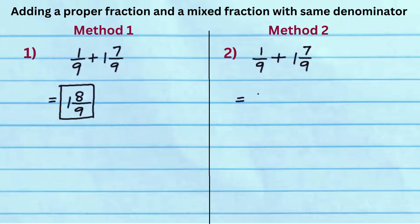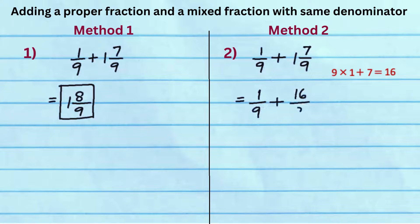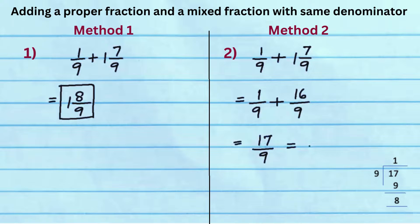In method 2, write 1 by 9 as is, and convert mixed fraction 1 and 7 ninths to 16 by 9. Add numerators 1 and 16 to get 17, and write denominator as 9. Since 17 by 9 is an improper fraction, simplify it to get 1 and 8 ninths.